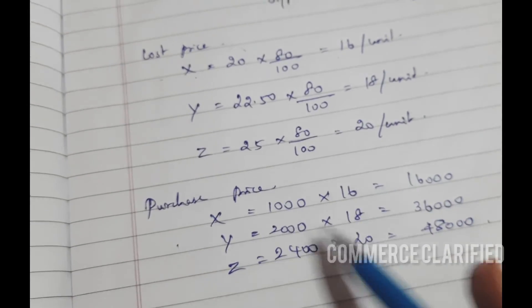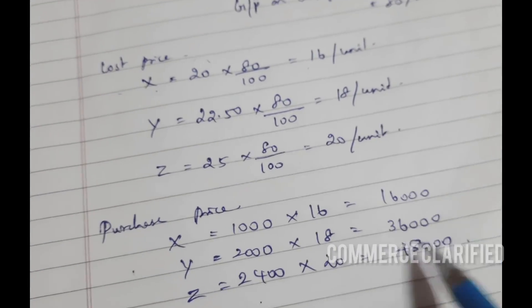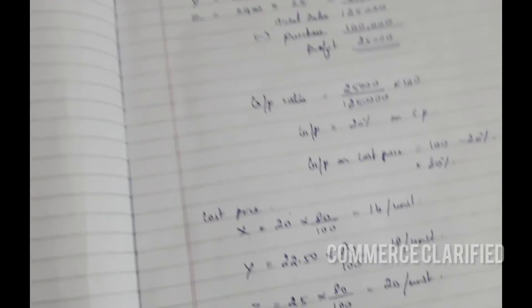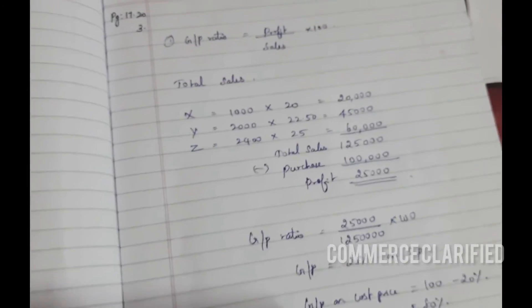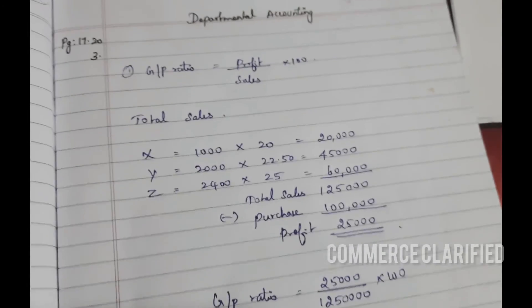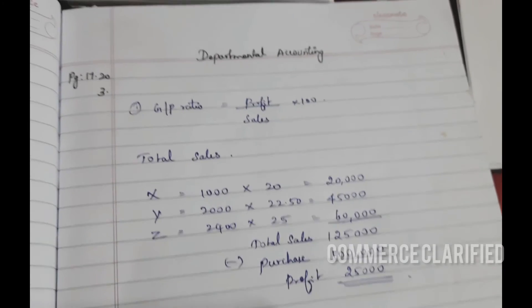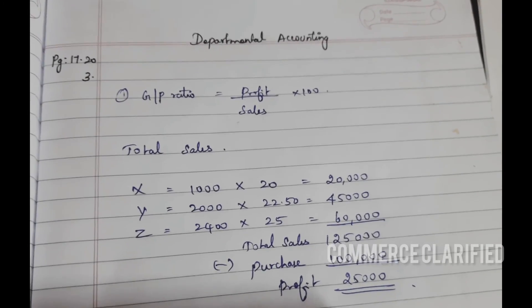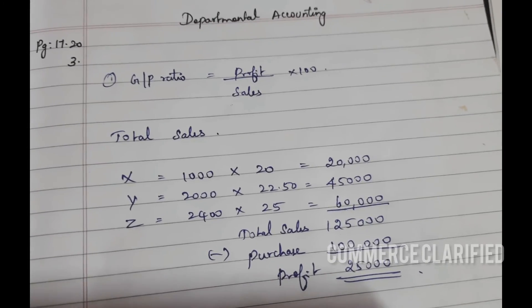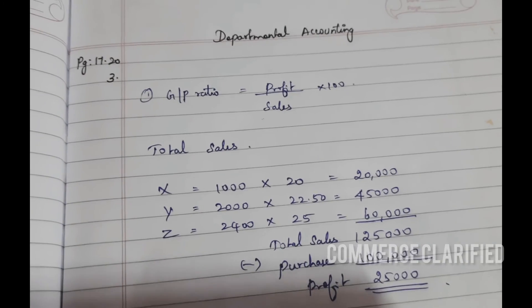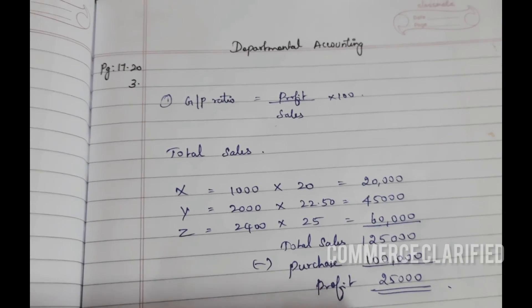The purchase amounts are: X = Rs. 16,000, Y = Rs. 36,000, Z = Rs. 48,000. We will see more in the next video. Thank you for watching.